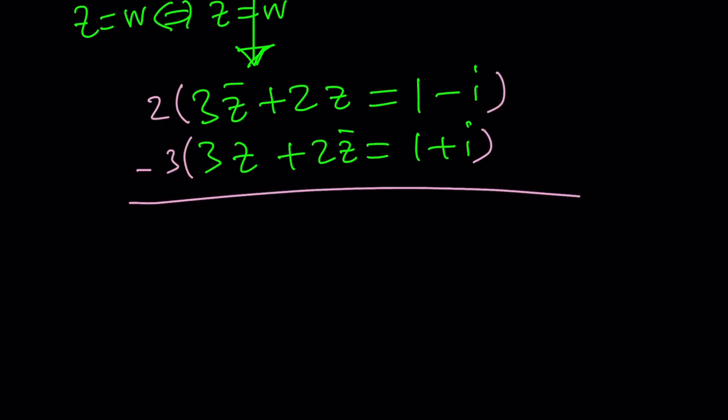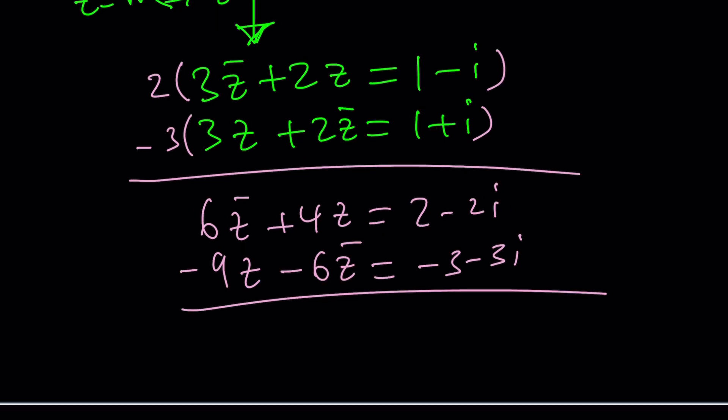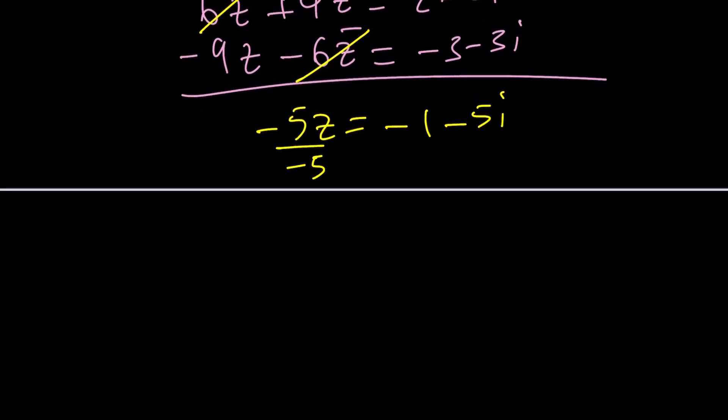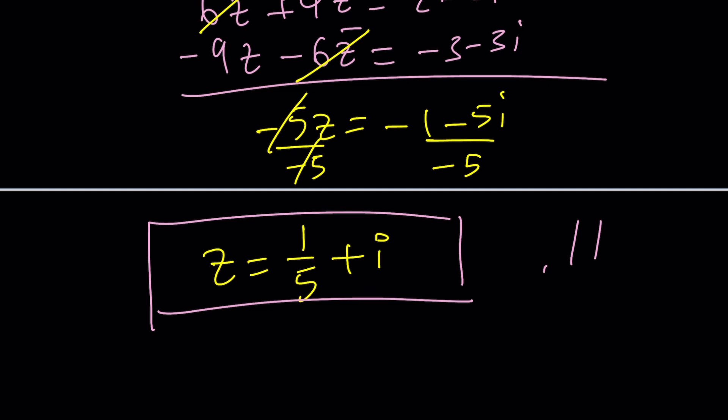Let's see what that gives us. 6z̄ + 4z = 2 - 2i, -9z - 6z̄ = -3 - 3i. If you go ahead and add these up, z̄ cancels out. We end up with -5z = -1 - 5i. And if you divide both sides by -5, you'll get z as a result, which is 1/5 + i. We get the exact same solution.